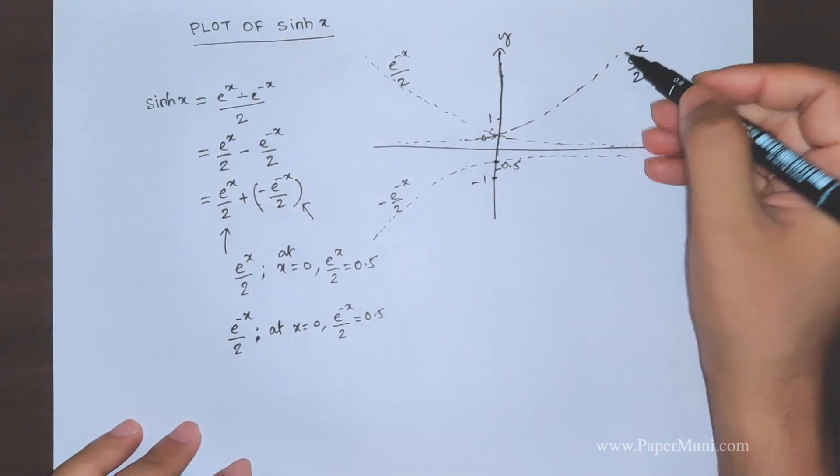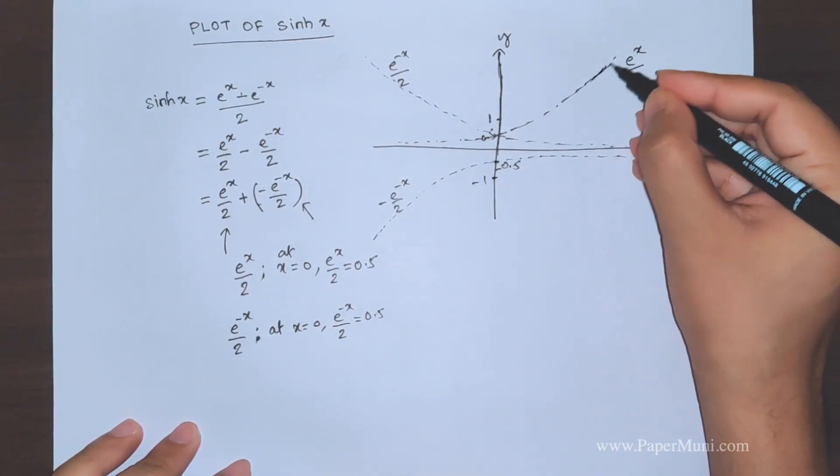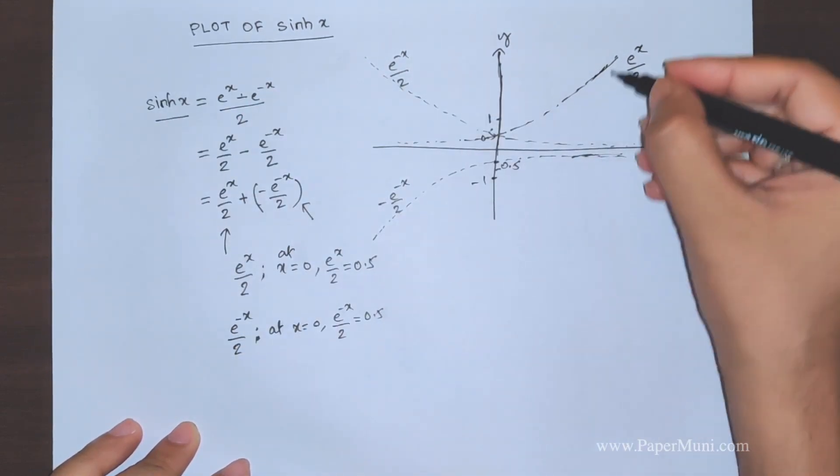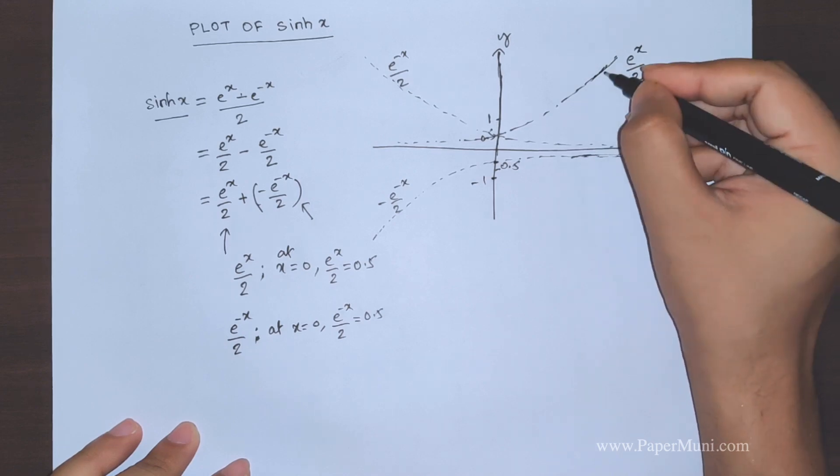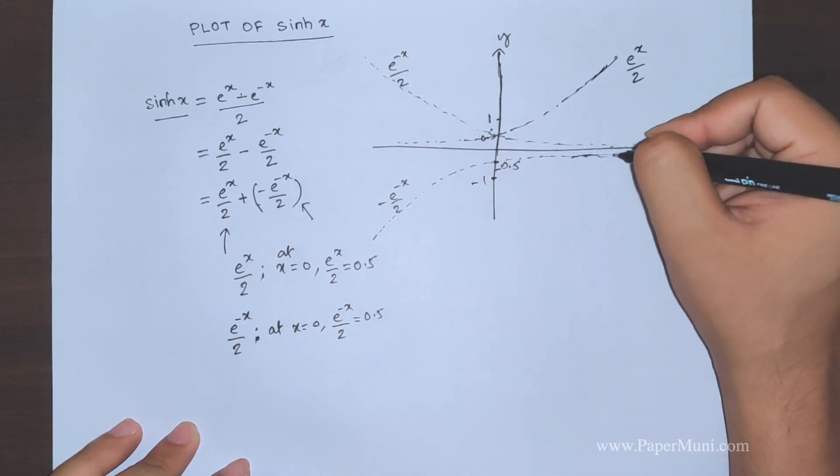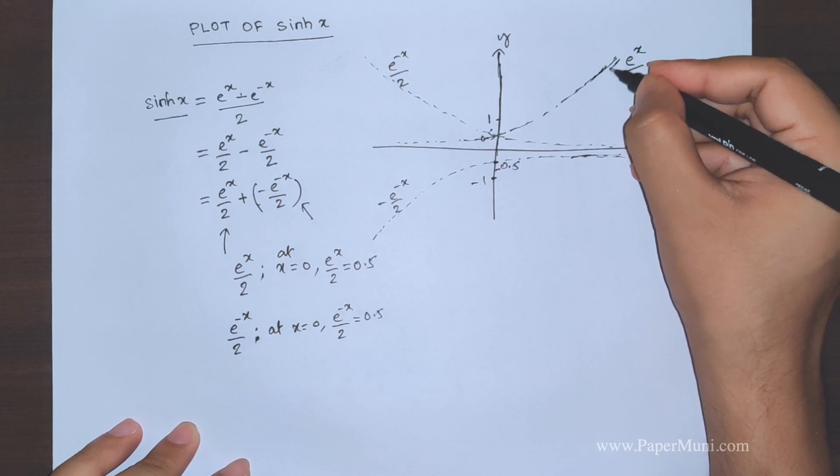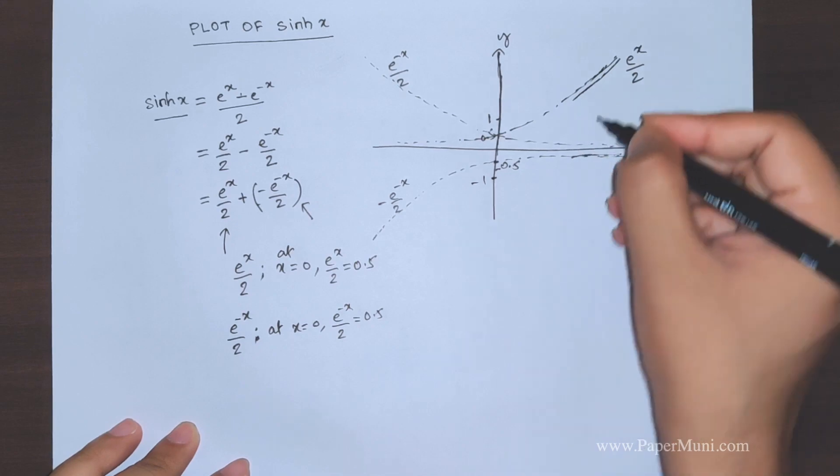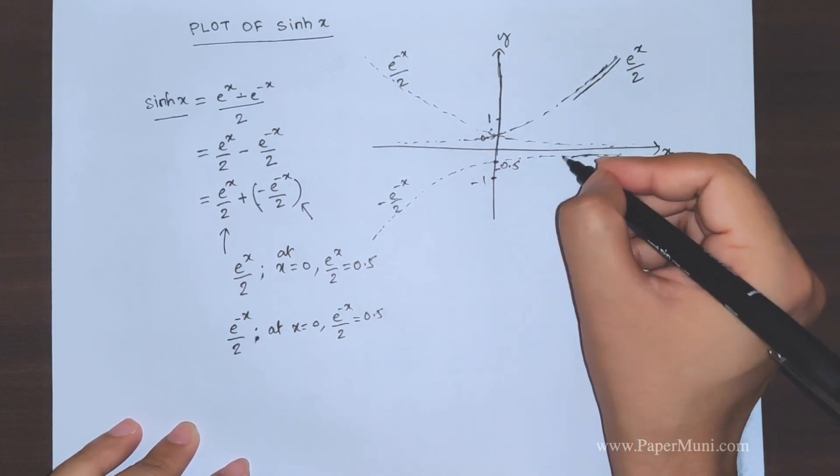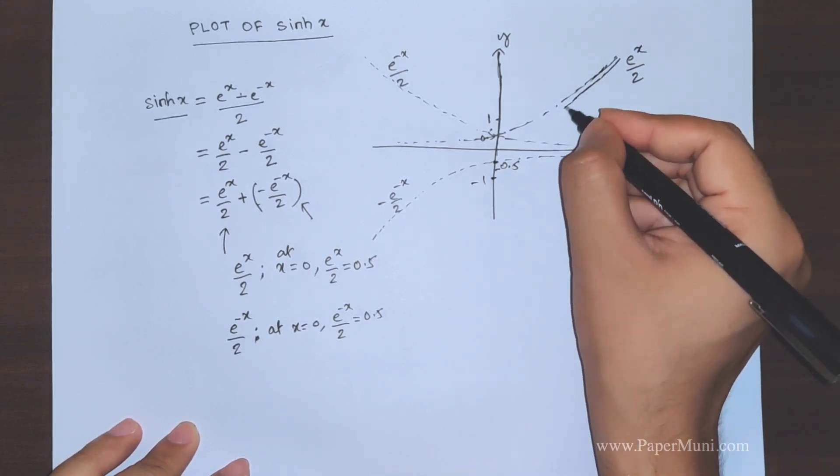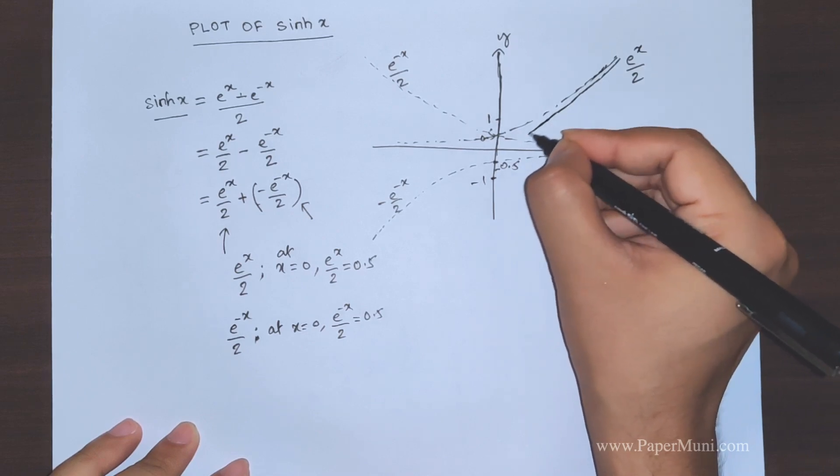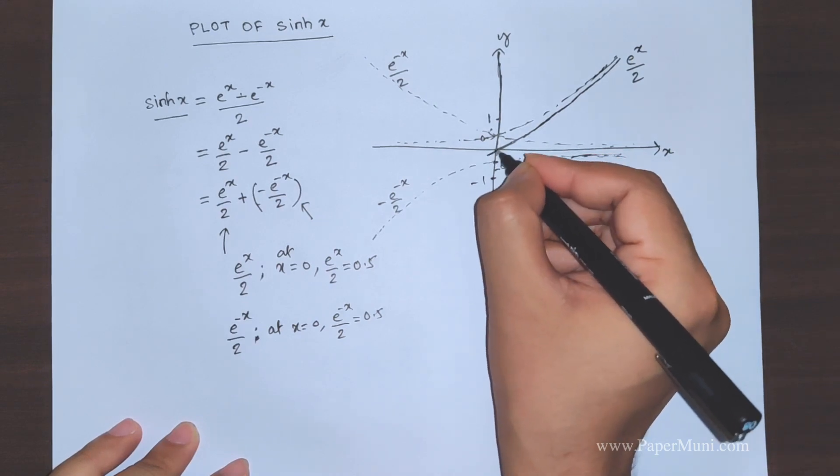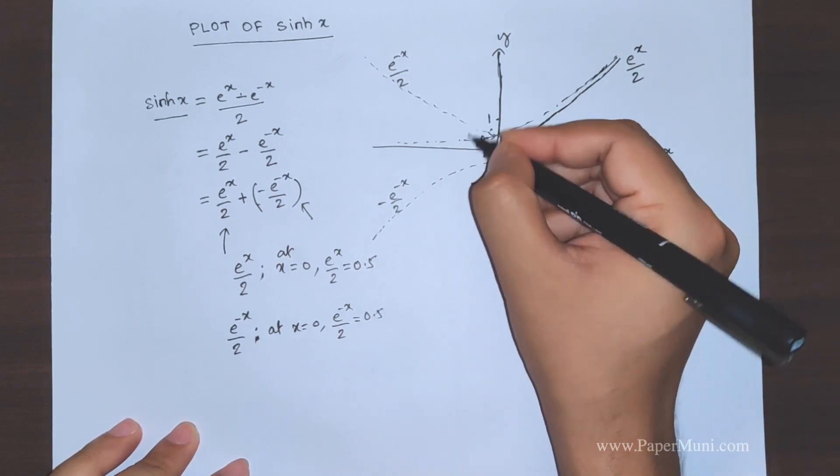So we'll add this graph to these two graphs, this one and this one, because this is the graph we require for sinh x. When we add them, this is a positive value, this is a negative value, so this graph will come down a little. And slowly both the values, this value keeps on reducing, these values keep on increasing, so at x equal to 0 it goes to 0.